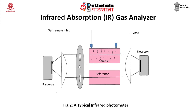NDIR instruments are primarily used for measurement of carbon monoxide, nitrogen oxide, SO2, water, methane, carbon dioxide, and many hydrocarbons.